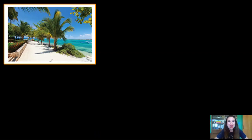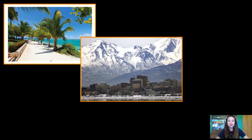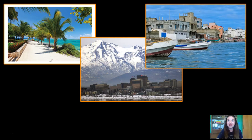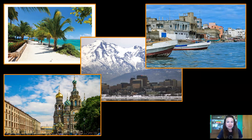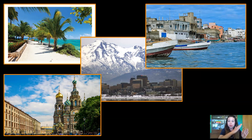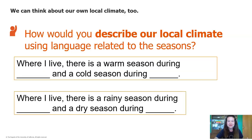Welcome back. We've been studying climates all around the world. Do you remember all of these places we've studied? We've been to Akumal, Mexico, Anchorage, Alaska, Dakar, Senegal, and St. Petersburg, Russia. All of these places had different climates, and all of those climates were really unique and interesting. Remember that we judge climate based on the temperature and the precipitation over a long period of many years, and climate happens in patterns that repeat themselves year after year. So when we think about climate, we shouldn't just think about faraway places — we should think about our own local climate, too.